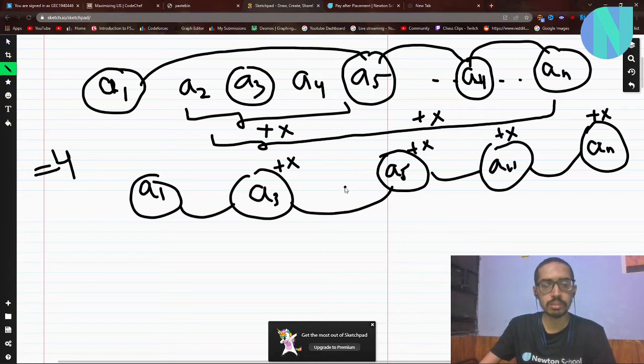You can see this subsequence still works because if a5 was greater than a3, then a5 is still greater than a3 plus x when we add the same x to a5. Similarly, if a11 was greater than a5, then a11 plus x will also be greater than a5 plus x. So basically, if we are doing a subarray plus x, it is always optimal to do it for the entire prefix or suffix.